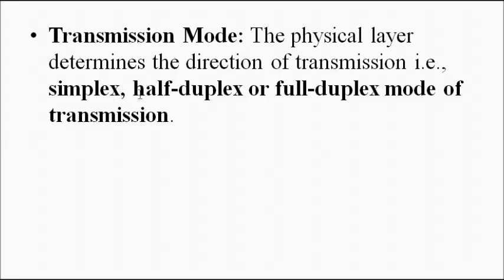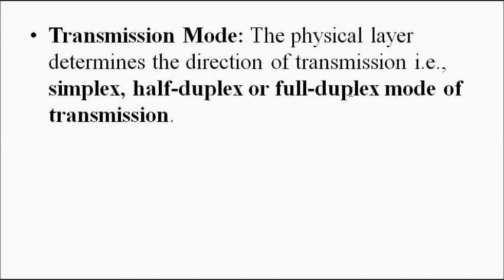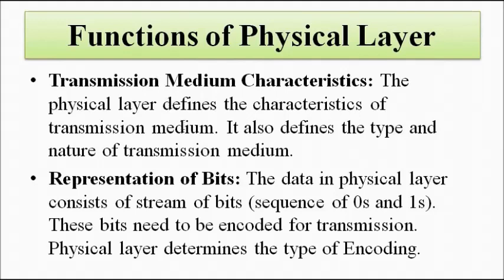Finally, the mode of transmission — whether it is simplex, half-duplex, or full-duplex — is also handled by the physical layer. All these topics, including transmission mode, line configuration, and network topologies (mesh, bus, star, ring), have been discussed in detail in separate introductory videos. In the upcoming videos, we will cover each of these aspects in detail, doing so in cycles: covering portions of the physical layer, then data link, network, transport layers, and returning again.